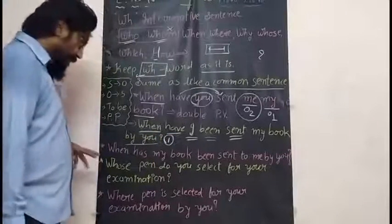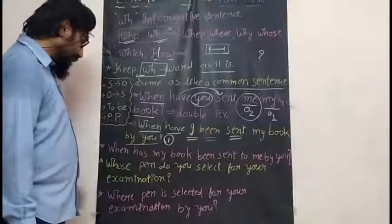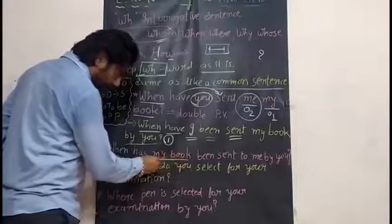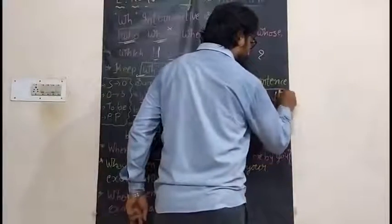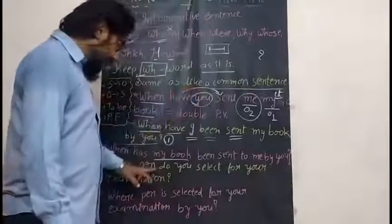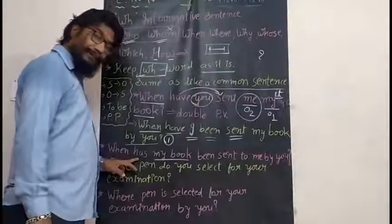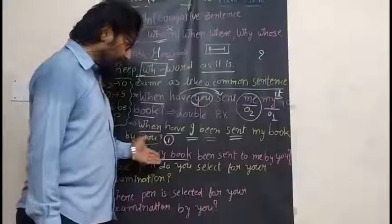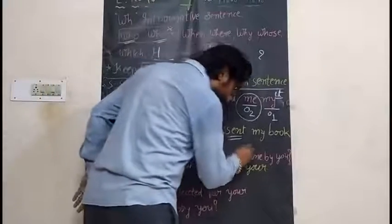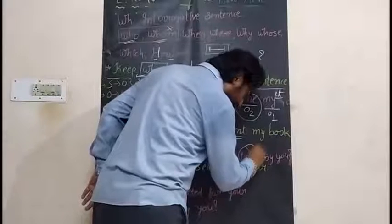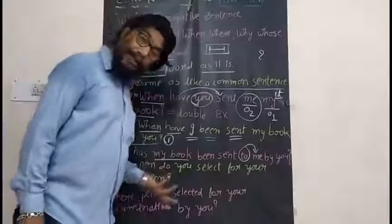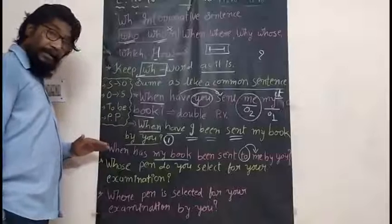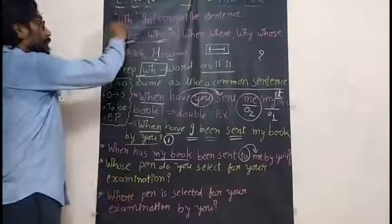Next we move ahead for the second passive. WHEN — as it is, without any change. But next to that is MY BOOK. MY BOOK is equal to IT. With IT, we cannot use HAVE — we have to use HAS. And so: WHEN HAS MY BOOK BEEN SENT — keep 'to me' as it is — BY YOU. In this way, we have completed the double passive in the WH interrogative sentence.